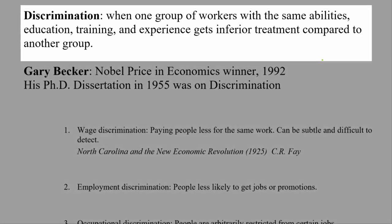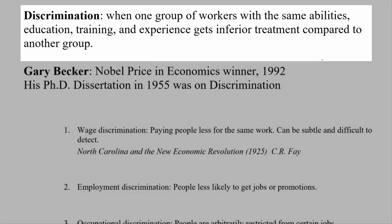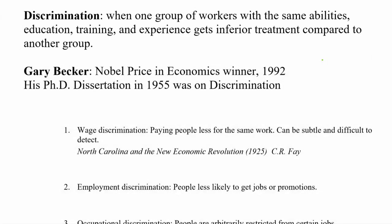In general, discrimination happens when some group of workers has the same abilities, education, training, experience, and work ethic — when we take two people identical in all respects except some characteristic — and one group is either getting worse treatment, worse opportunities, or worse pay. That's discrimination.